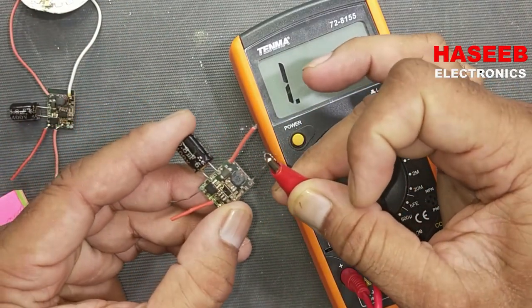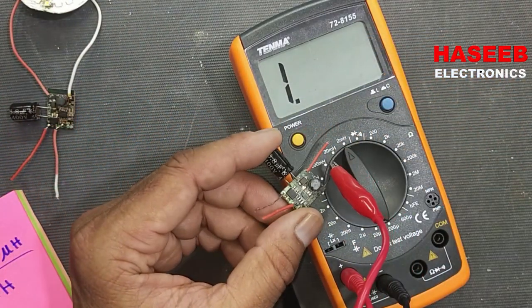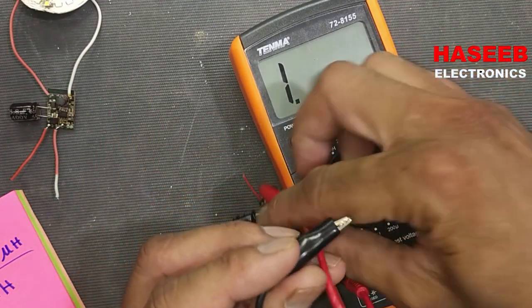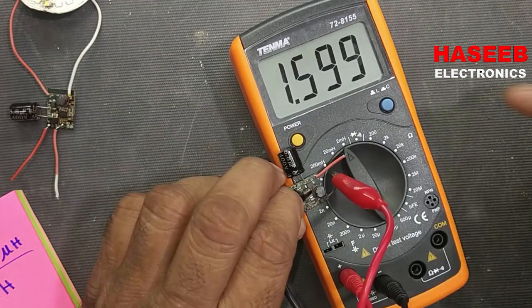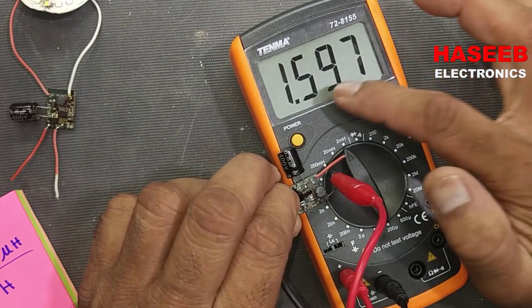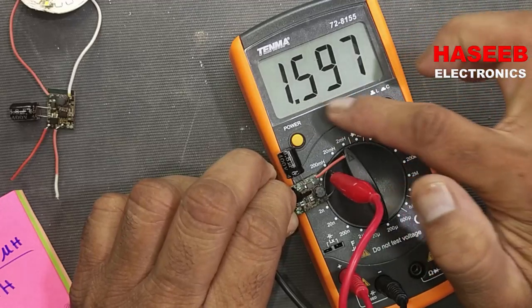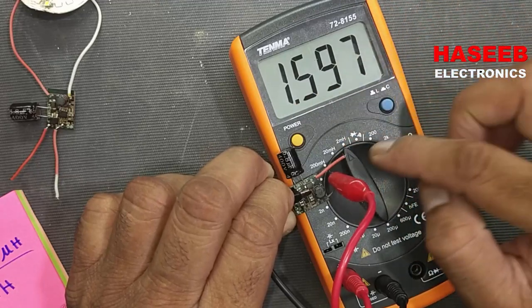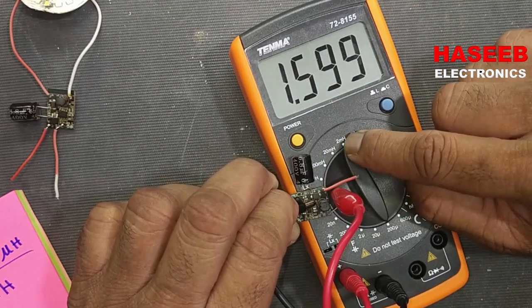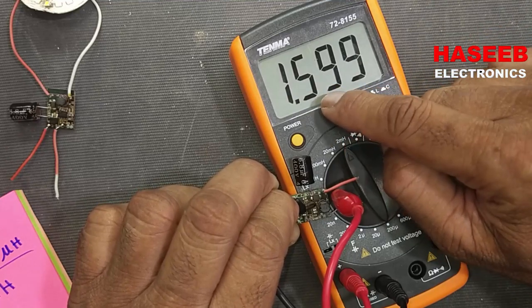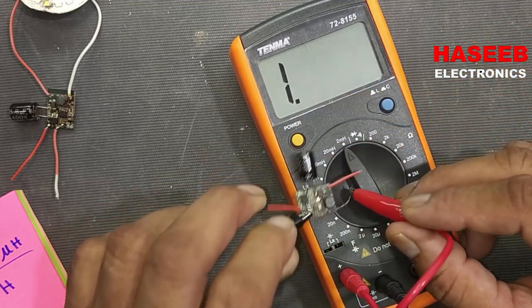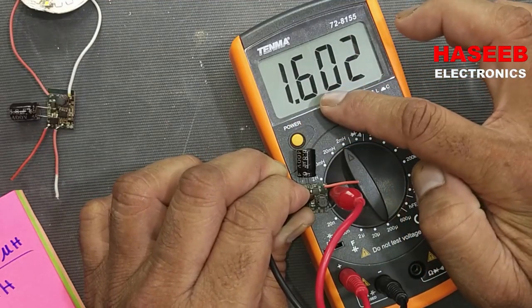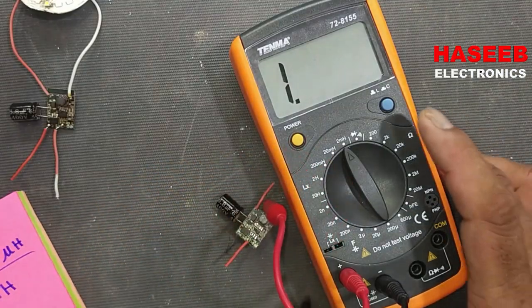I will connect one lead to the output end of the coil and the second end to the input side. It is giving 1598, 1.6 millihenry. It is showing 1.598, we can say 1.6 millihenry because the range selected is 2 millihenry, so it is less than 2 millihenry. 1.6 millihenry, or we can say 1602 microhenry.